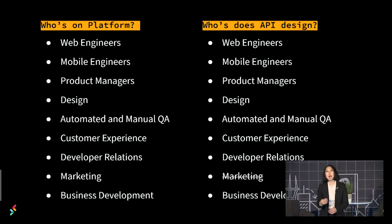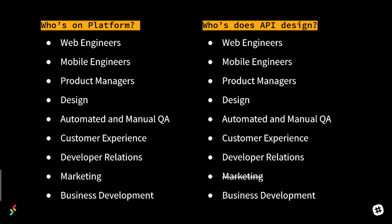Who's on one of these product development teams? It's actually a lot of people, and specifically a lot of people for the developer platform team. We've got web engineers, mobile engineers, product managers, design — it's very cross-functional. We've got QA, customer experience, developer relations, marketing, business development, and probably more functions that I couldn't fit on this slide. And who all is involved in API design? Everyone except for marketing. We're constantly getting feedback from our developers from so many different sources — support tickets, engineers across the organization — and that feedback informs our design decisions.